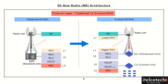In 4G or conventional networks, the baseband unit caters to all the different protocol layers and has all functionalities embedded within it. Whereas in evolved technologies, some of the real-time functionalities will be catered by the distributed unit, while other non-time-critical functionalities will be taken care of by the central unit.